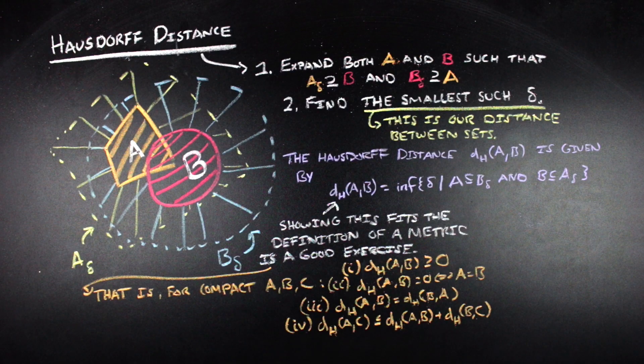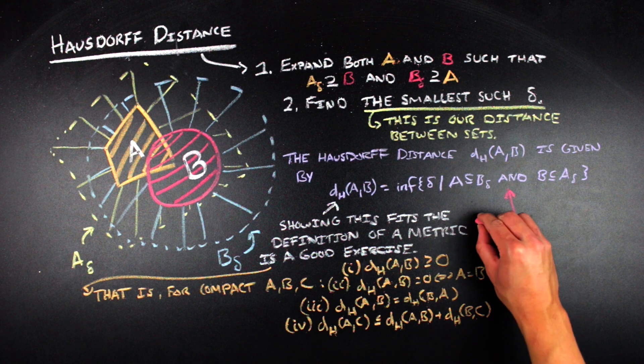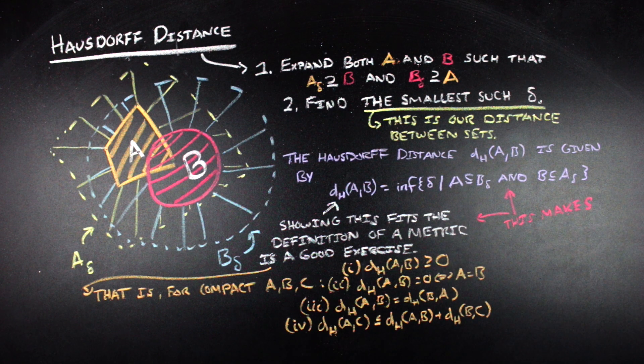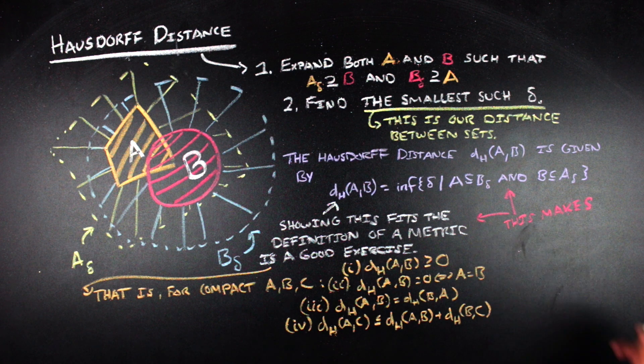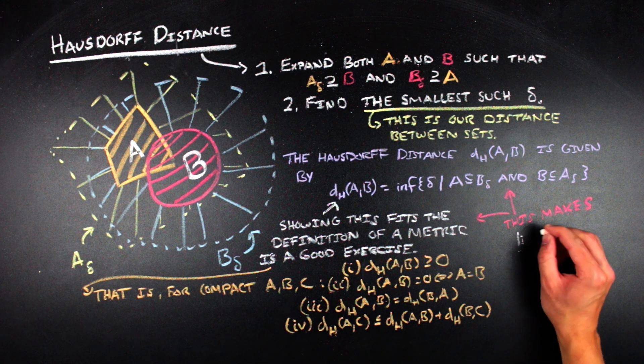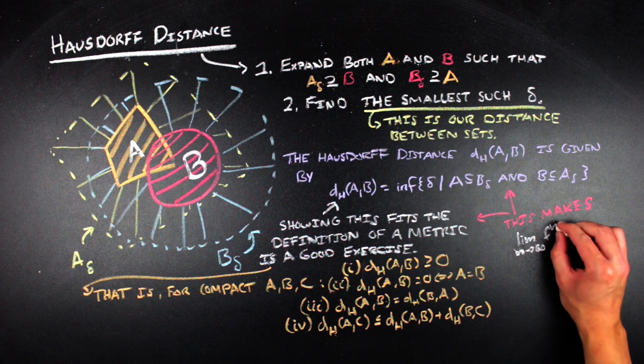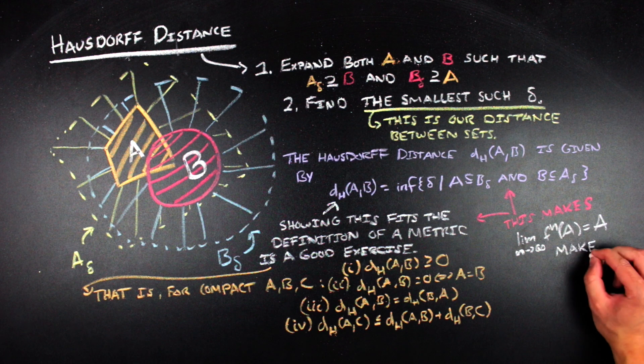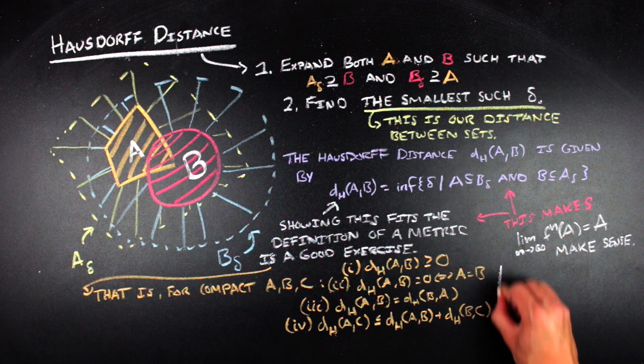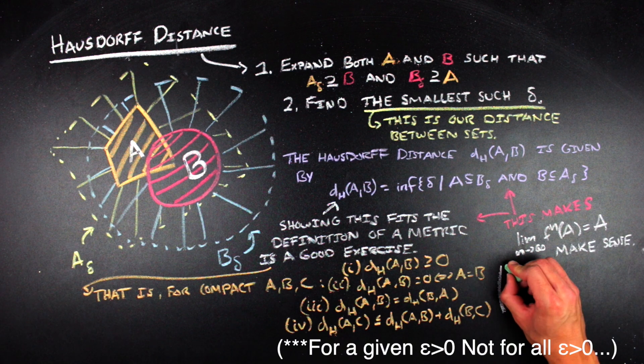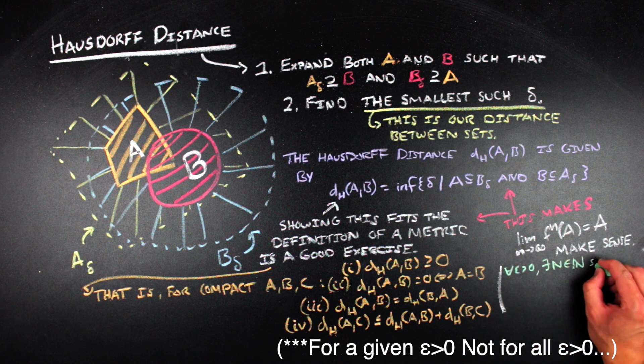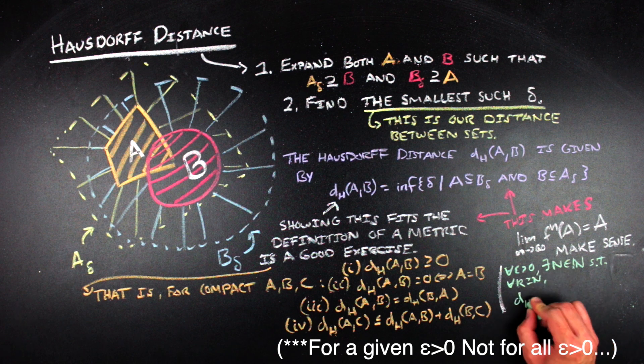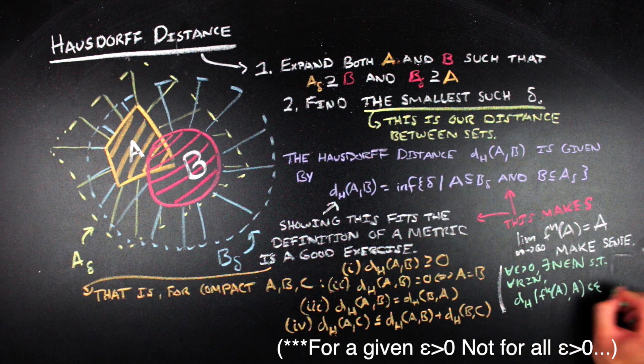The cool thing about getting a metric out of this is that we can start to talk about sequences of sets, and it makes the limit as you apply a function over and over again to a particular set equaling another set make sense because we can then define that limit using the Hausdorff distance instead of the Euclidean distance. That is, for a given epsilon greater than zero, there exists a big N within the natural numbers such that for every little k that is greater than or equal to big N, the Hausdorff distance between the kth iterate of the function applied to A and your supposed limit set is going to be less than epsilon.